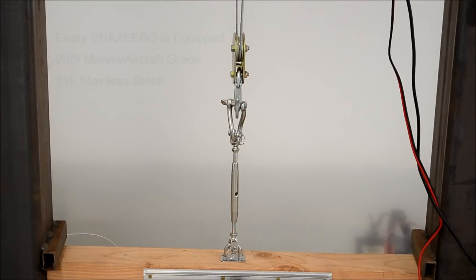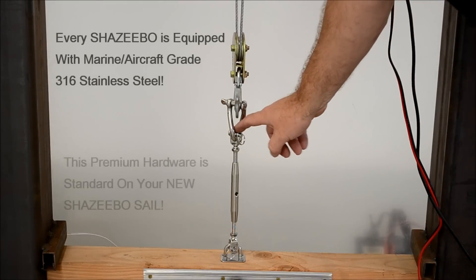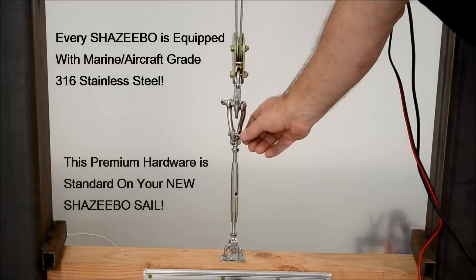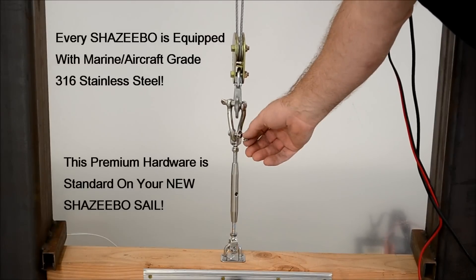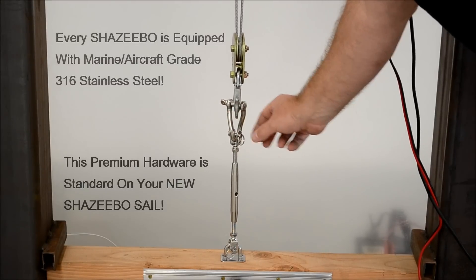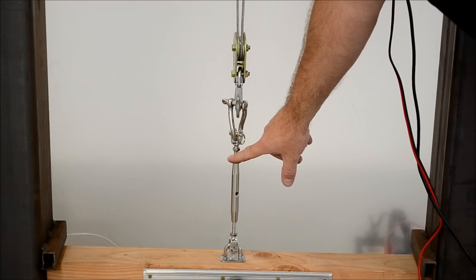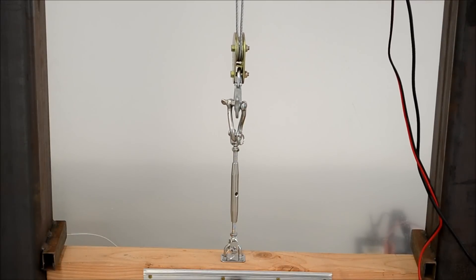Next we're going to test the jaw turnbuckle that captures the hardware with the pin, so there's no way for this to straighten out. So for this turnbuckle to fail, it's going to have to break completely.